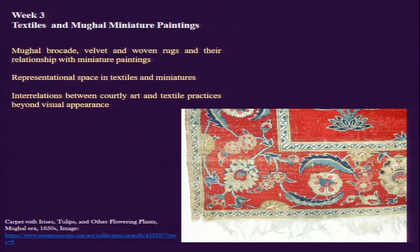In this week we will be focusing on a number of different textiles and their interrelation with a number of other kinds of objects. In the last week we mostly looked at the relationship between textile and architecture, and this week we will be looking at textile architecture as well as miniature paintings, which was one of the predominant means of visual representation during the Mughal period. Some of the themes we will be touching upon include Mughal brocade, velvet, and woven rugs and their interrelations with miniature paintings.